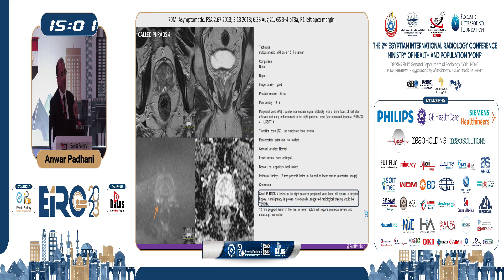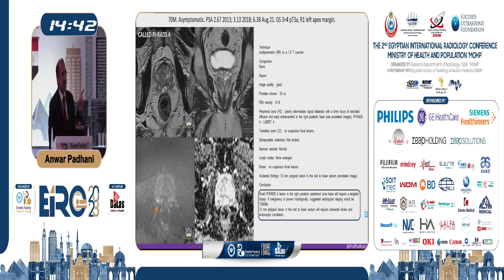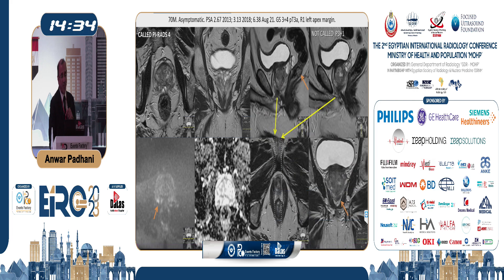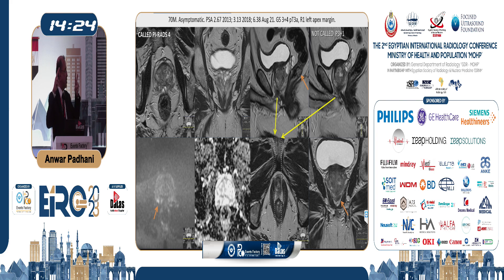Here is a man with a small PIRADS 4 lesion, shown by the arrow. The radiologist's report says there is a PIRADS 4 lesion at the right base, and also a polyp in the rectum. You can see the polyp on the orange arrow on the sagittal image.